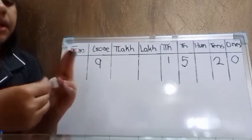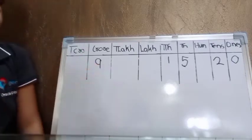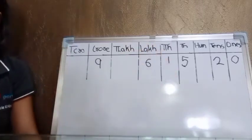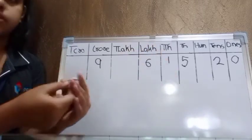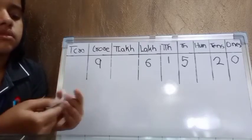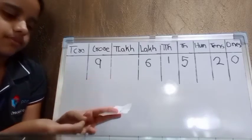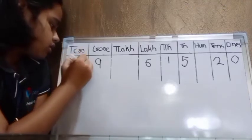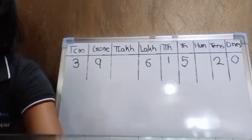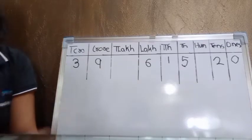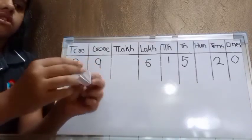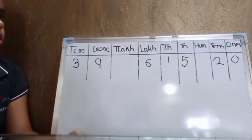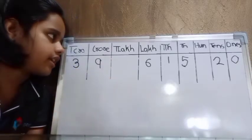Next is 10,000s place and we write number 1. Number 6 goes in the lakhs place. Next is 10 crores — in the 10 crores place we have to write 3. Next is 10 lakhs, and here we have to write number 8.